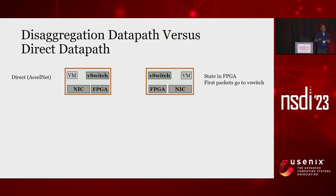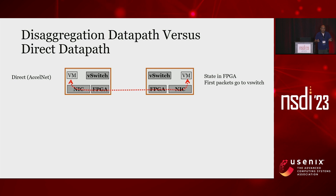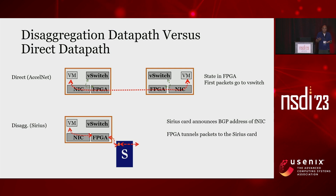A typical question with disaggregation is what does data path performance look like — are you making it worse? Let's compare the default data path in Azure with the data path in Sirius. When two VMs talk to each other in Azure, they SR-IOV map into the NIC and all network function processing goes through the FPGA, except there's an exception path for new TCP connections where they're bounced into the virtual switch which changes state in the FPGA. This is the current bottleneck. In Sirius, the vSwitch is out of the picture — the floating NIC is mapped to a Sirius card and all traffic is steered from the FPGA to the Sirius card.